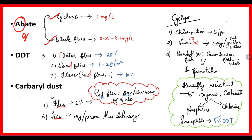Next, coming to DDT — the arthropod vectors that correspond to the letters D, D, and T are the Sand Fly, Sand Flea, and Tsetse Fly. Next, coming to Carbaryl Dust — Carbaryl Dust is used for ectoparasites, specially the Lice and the Flea.